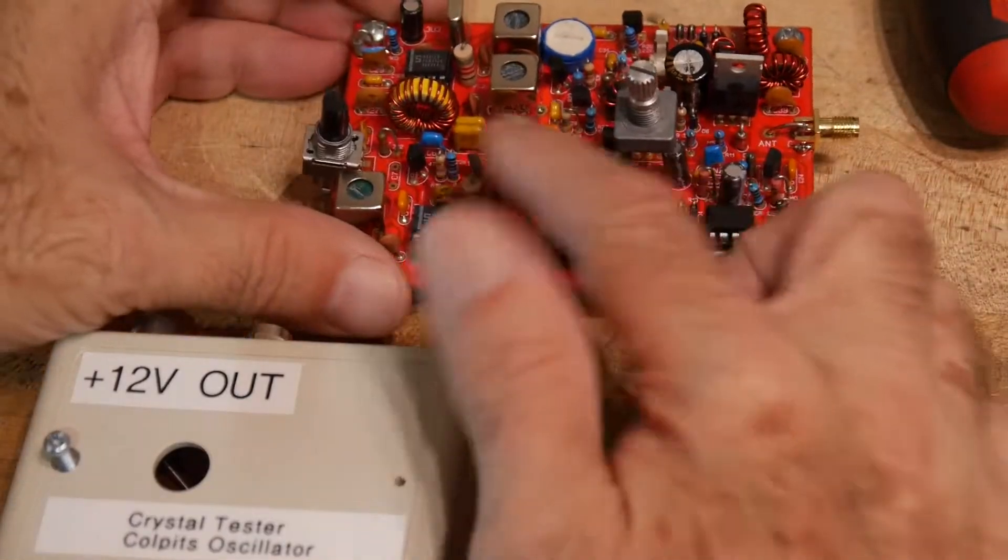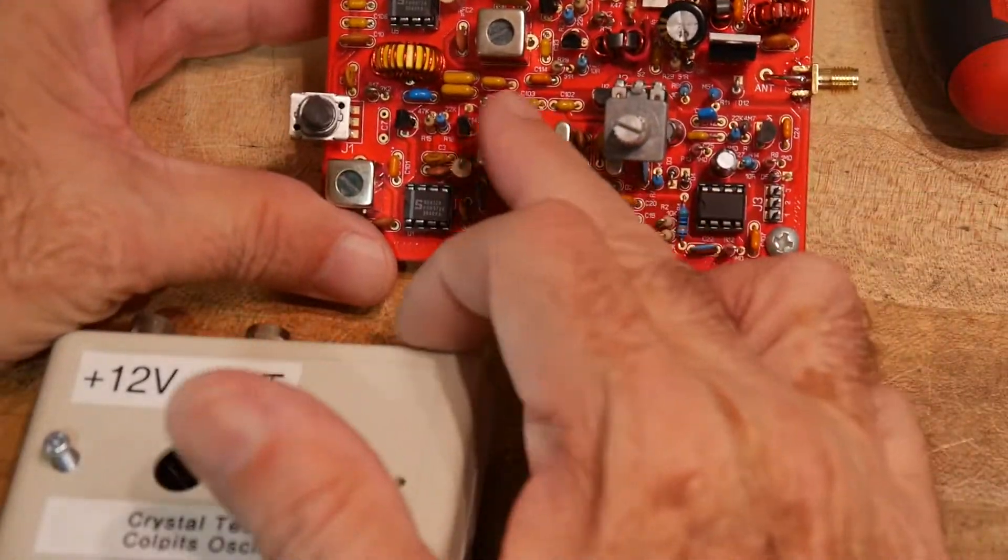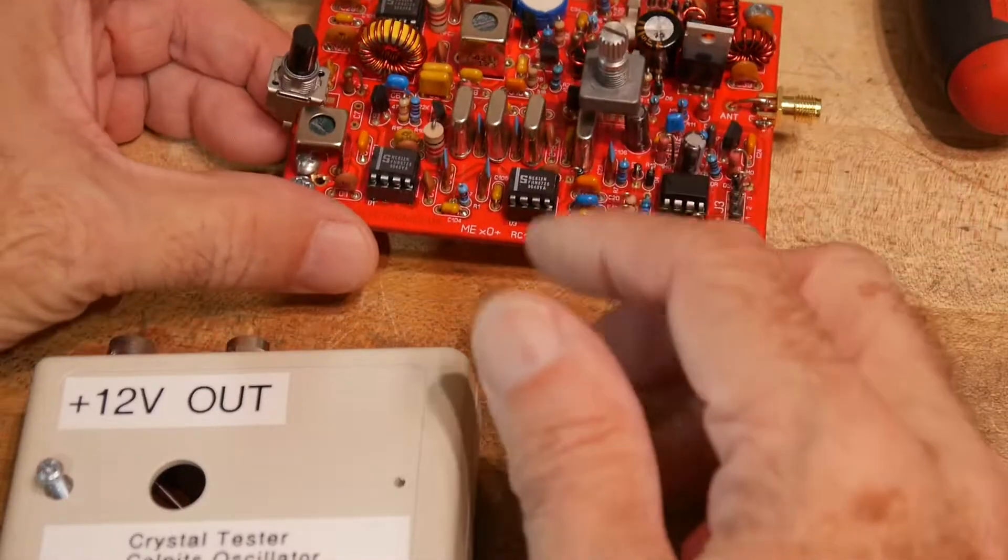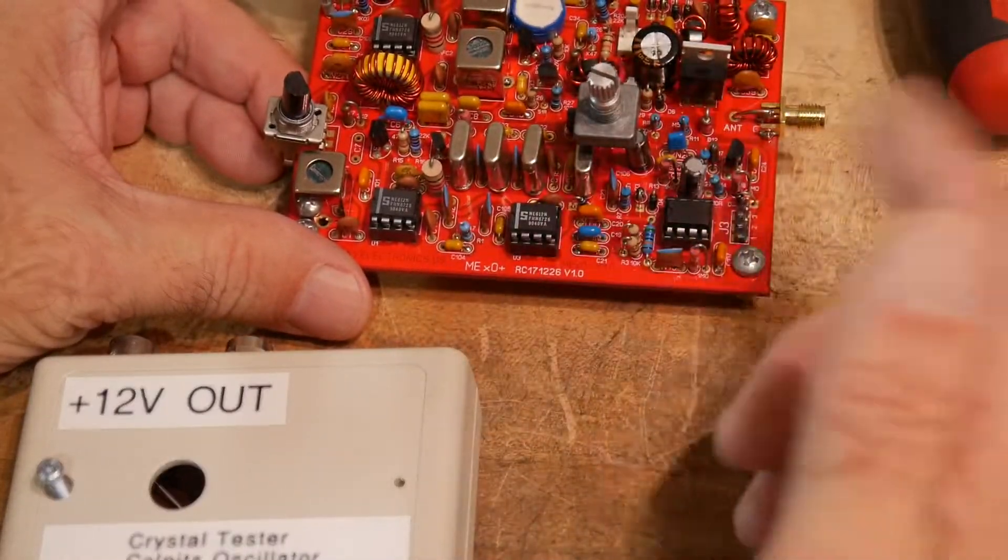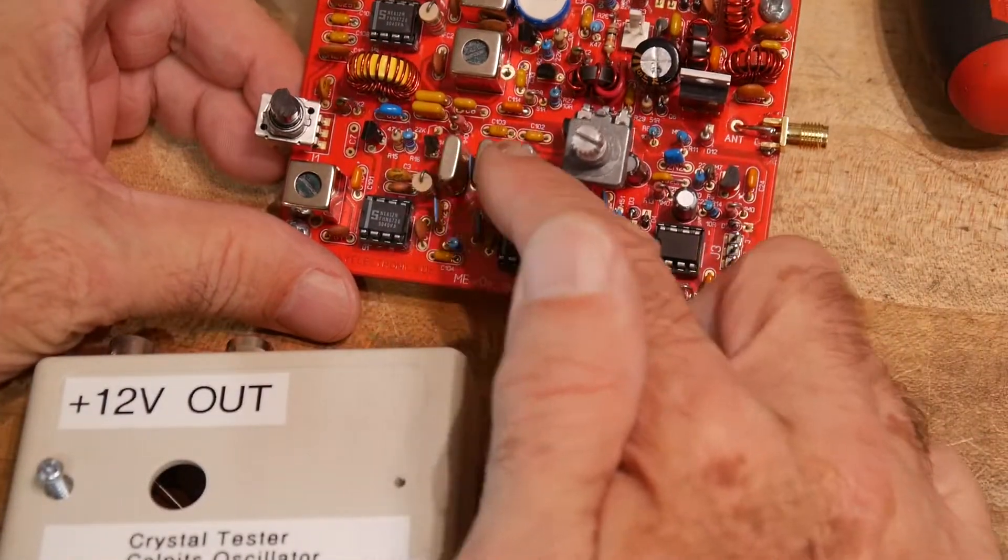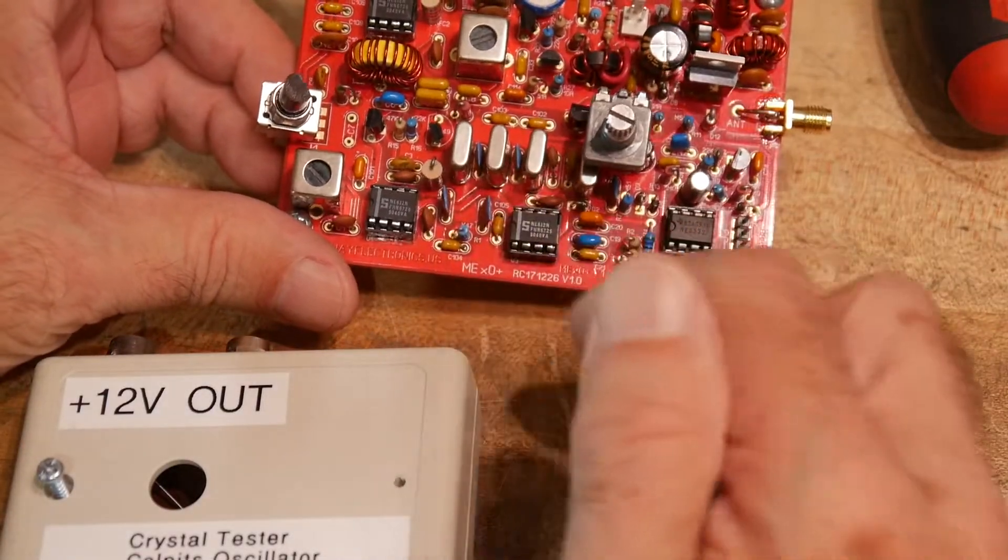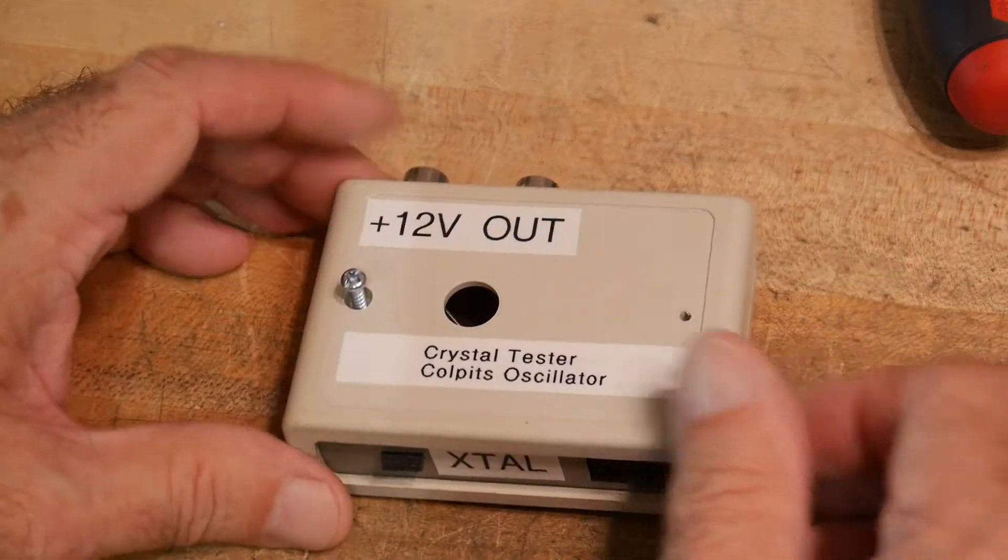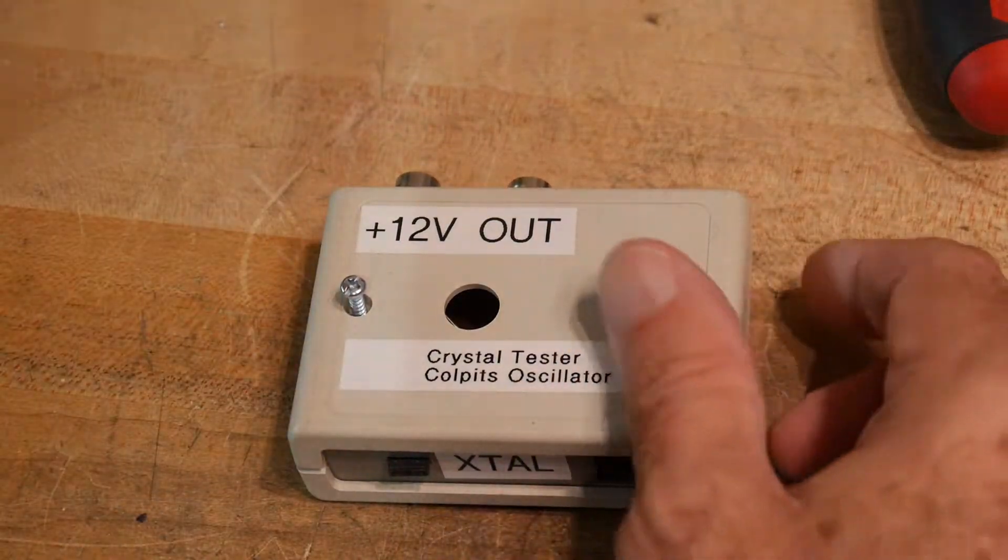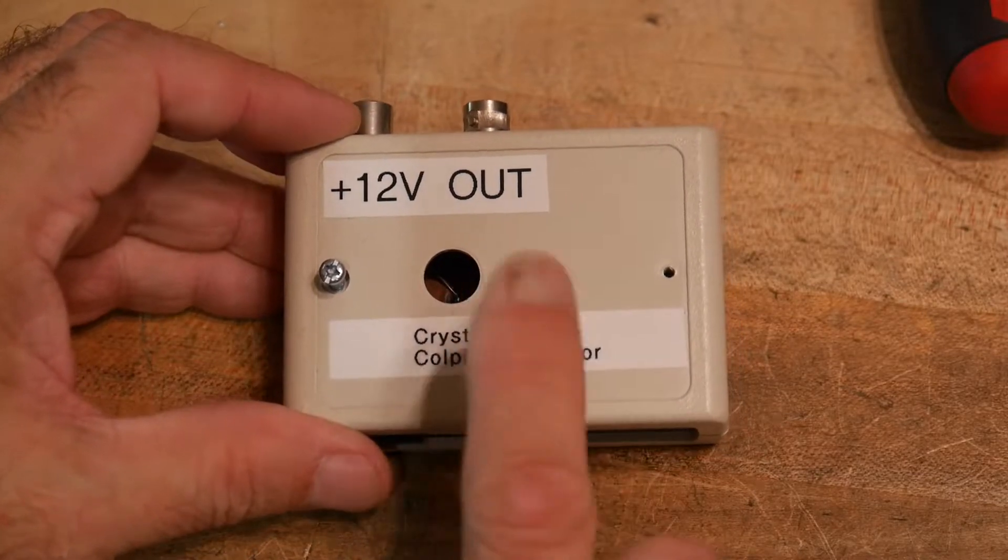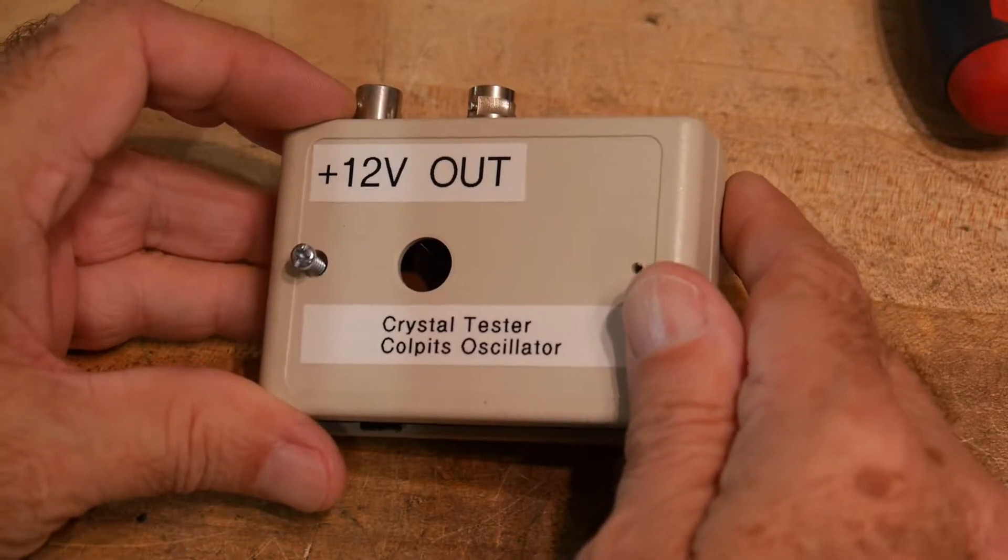I remember using it for selecting these crystals for this transceiver, oscillating them and sending them to a frequency counter to figure out their fundamental frequencies. I used this box here, so I thought today I'd show you what's inside this box. It is just a simple Colpitts oscillator, and I'll explain what a Colpitts oscillator is.